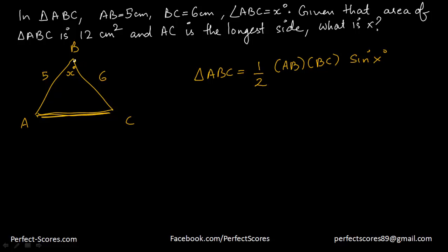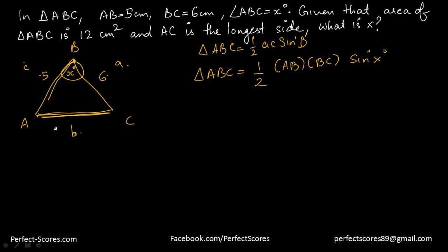Now, labeling the diagram: if B is the vertex, then the sides adjacent to B are AB and BC, and the angle at B is x. So applying the formula, area equals half AC sin B — but here our two known sides meeting at angle x are AB and BC, so area equals half × AB × BC × sin x. This equals half × 5 × 6 × sin x, and that equals the given area of 12.